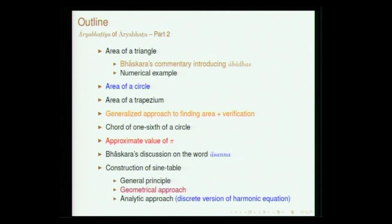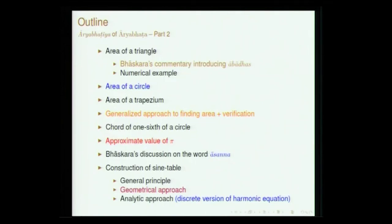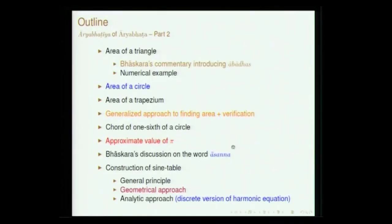Aryabhata has given two different approaches for constructing the sine table. One is the geometrical approach, the other is the analytic approach, and we will see both of them. During our discussion on the verse which gives the value of pi, we will also see an interesting note given by the commentator Bhaskara on the use of the word 'Asana'. This has been discussed at great length by Nilakantha Somayaji, which will be covered later, but here we will see Bhaskara's note on the use of that word.